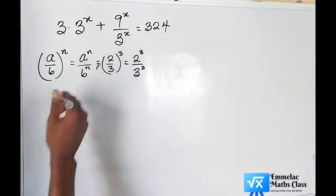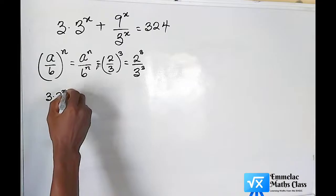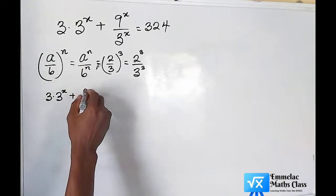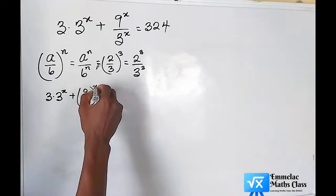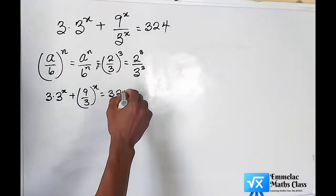So the above equation becomes 3 times 3 raised to the power of x plus 9 over 3 all raised to the power of x equals 324.